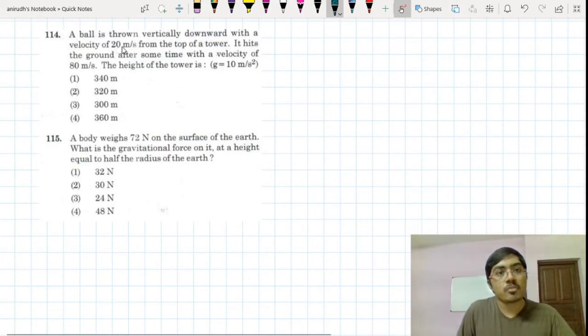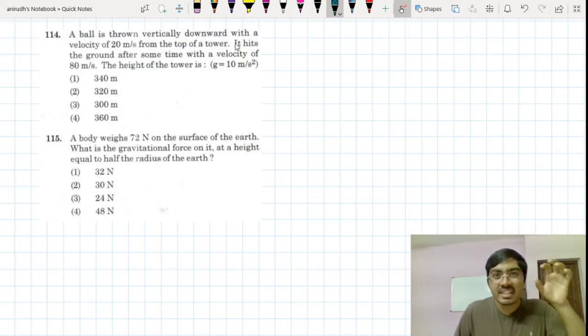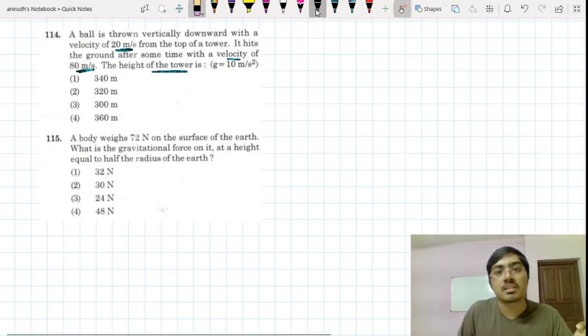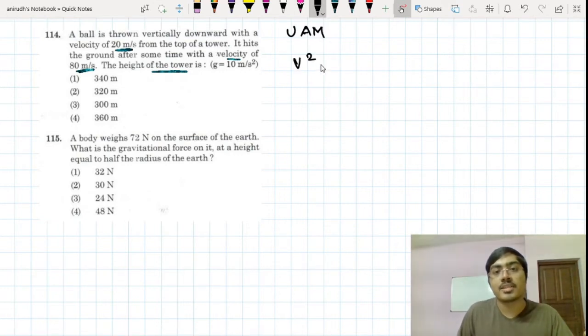Question number 114 is again more simpler than ever, straight line motion, motion in one dimension. A ball is thrown vertically downward. It hits the ground with a certain velocity. You have the final velocity, you are required to find out the height. You know it is a uniformly accelerated motion.